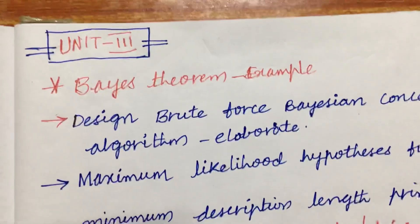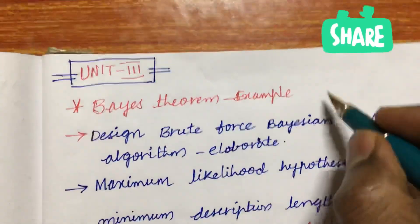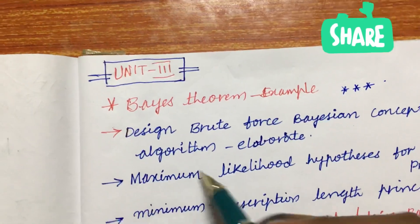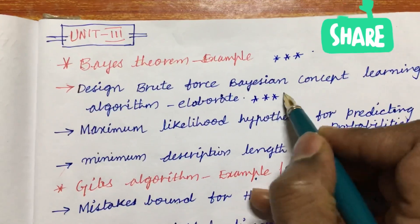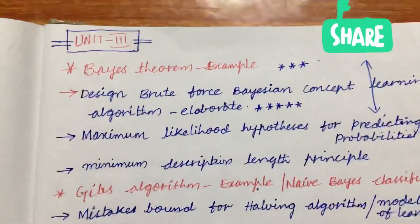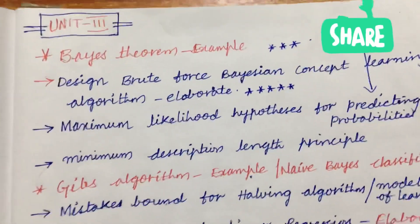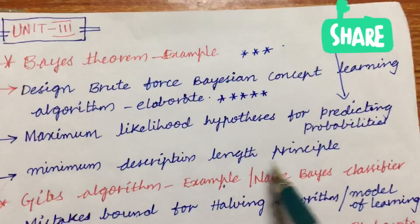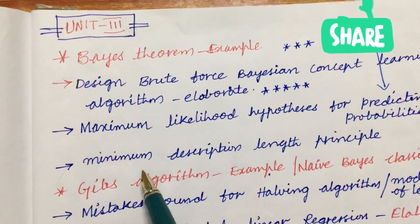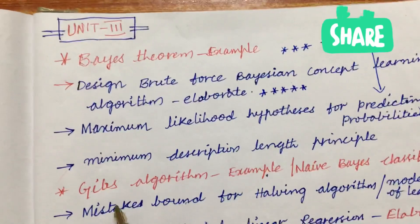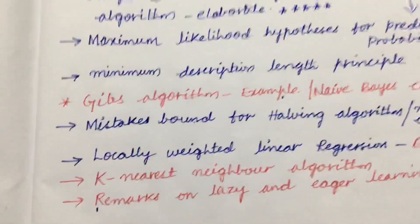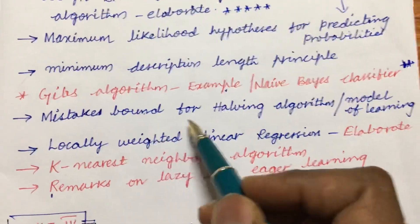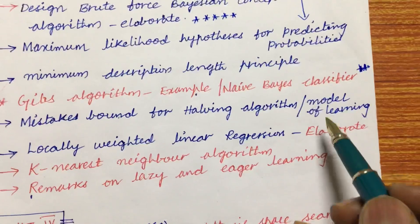Unit 3 is very important. It covers Bayes' theorem with illustrated examples, and based on that, designing the brute-force Bayesian concept learning algorithm — both are very important questions. Out of these two we can expect one question for sure in the R18 examination. The maximum likelihood hypothesis for predicting probabilities, the minimum description length principle, the Gibbs algorithm with examples, and naive Bayes classifiers are also very important. The mistake bound for the halving algorithm or the mistake bound model of learning is also a likely 7-mark question.